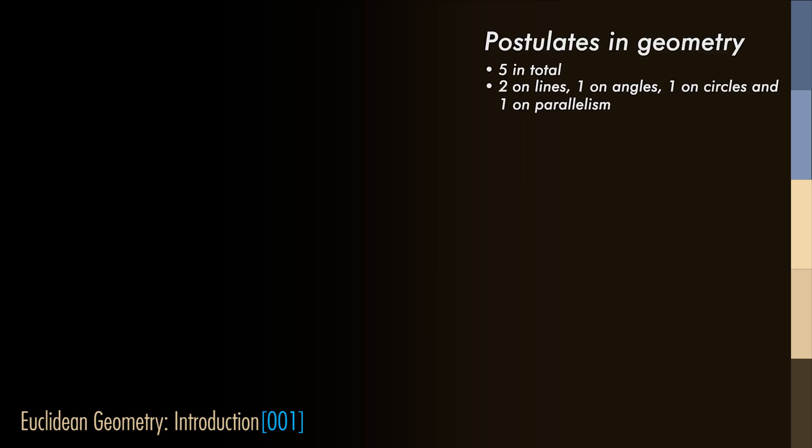Euclidean geometry is based on five postulates, two of them we will need right away. In order to talk about the postulates of Euclidean geometry, it is first necessary to define some concepts.